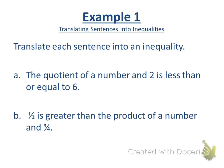So let's translate each of these sentences into an equality statement. The quotient of a number and two is less than or equal to six. What would that translate into algebraically? X over two is less than or equal to six. What about one half is greater than the product of a number and three-fourths? One half, greater than symbol? Six times three-fourths or three-fourths X. That's the product of a number and three-fourths.